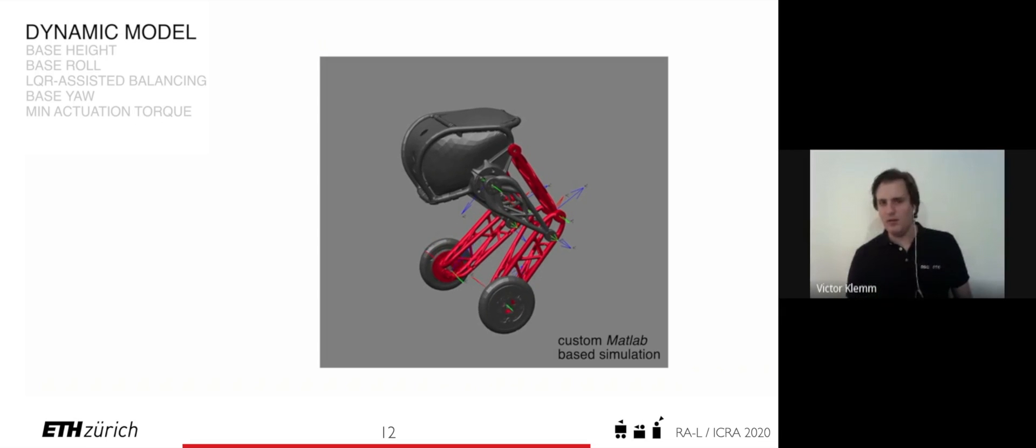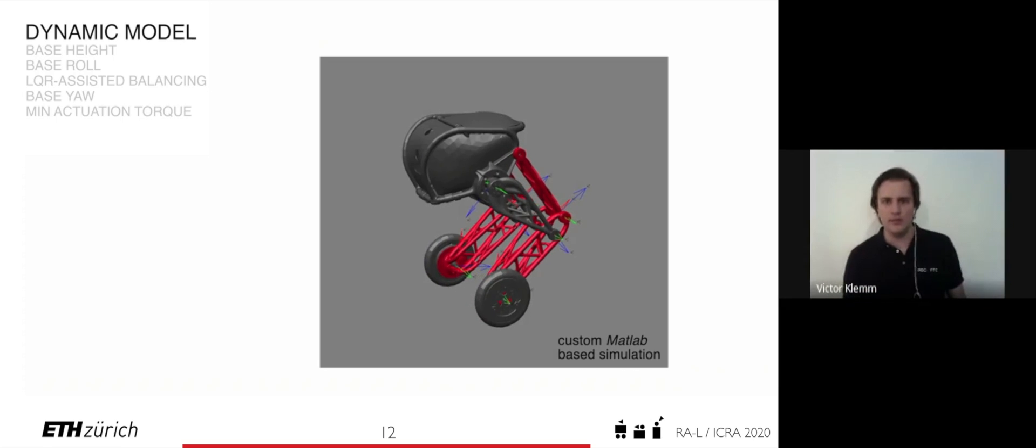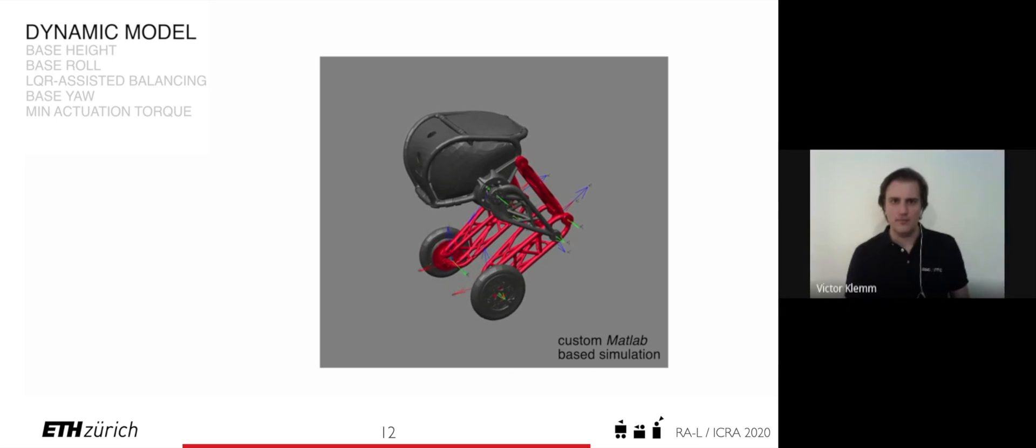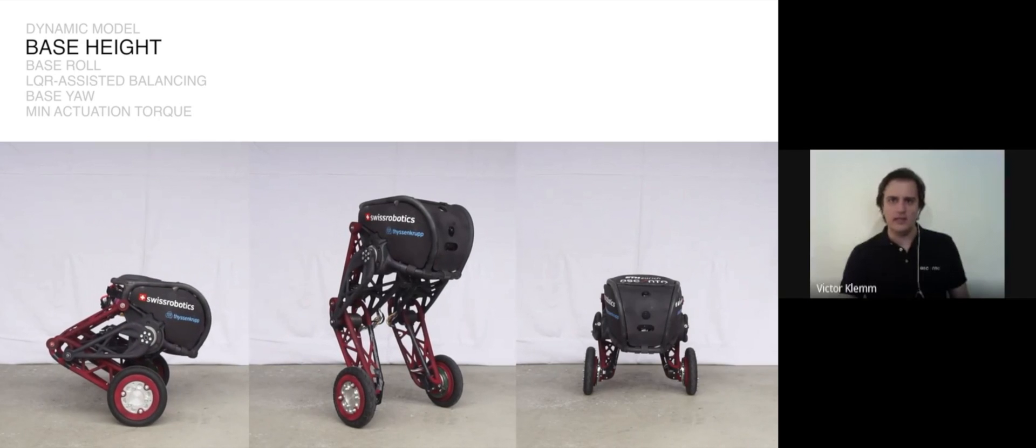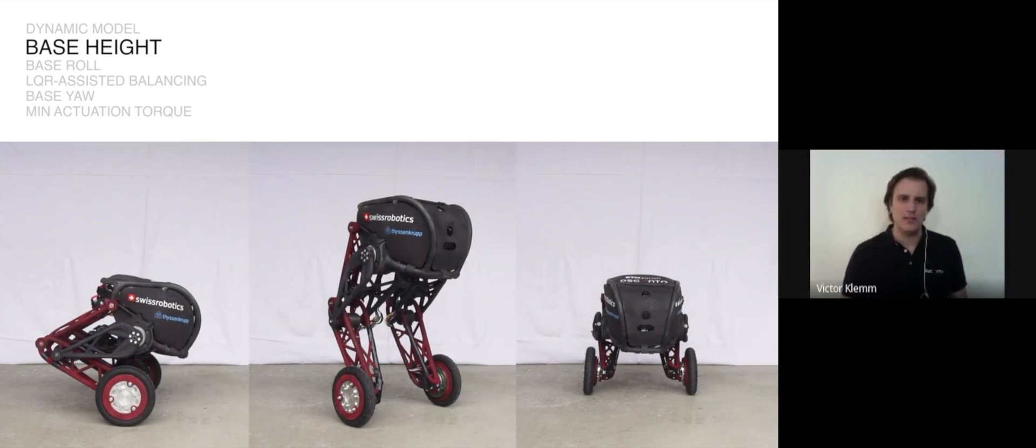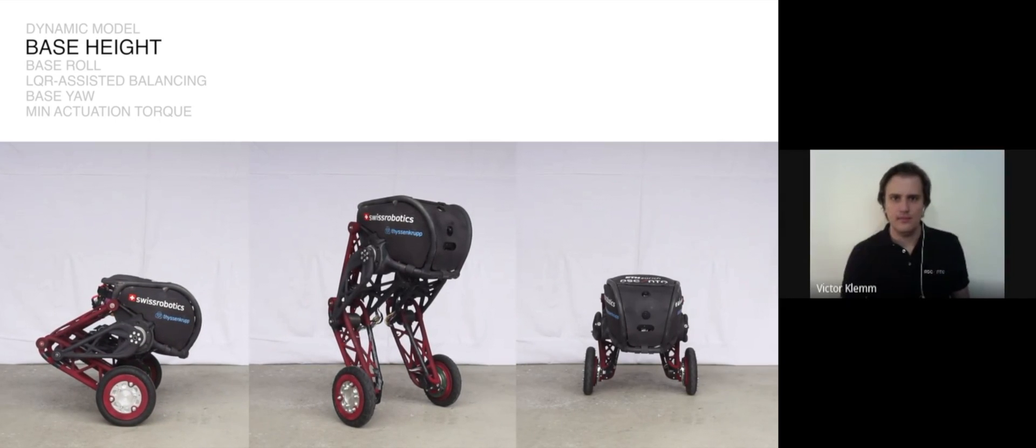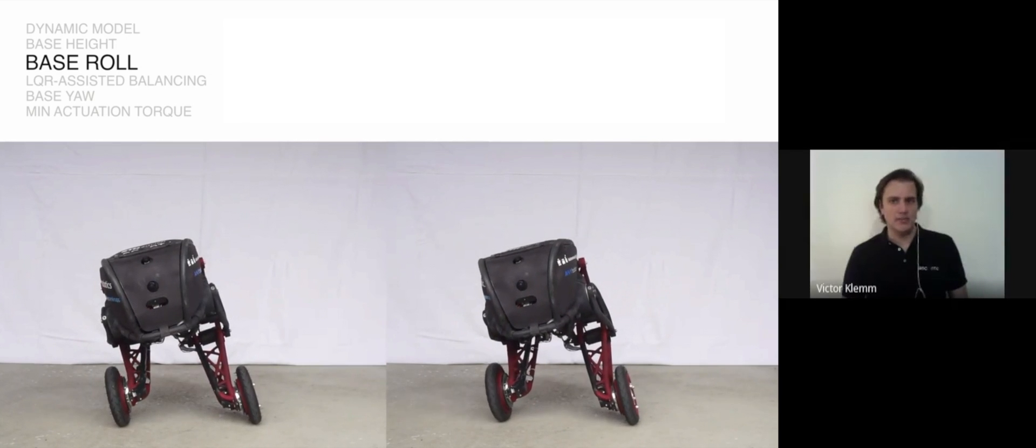The dynamics model comes in as a first task meaning that the controller must respect the physics of the system. The model was validated in a custom MATLAB simulation. The second task controls the height of the robot. It enables intuitive control based on the velocity, position, and acceleration trajectory.